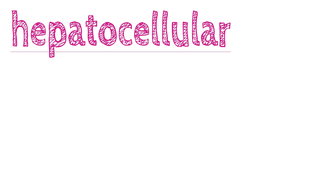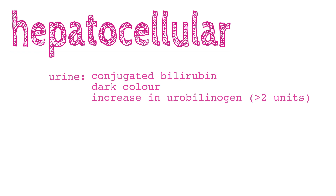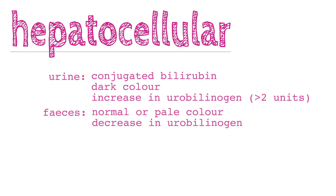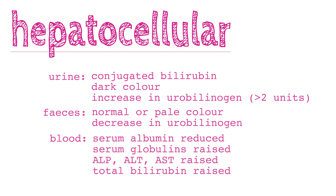Lab findings for intrahepatic jaundice: the urine has conjugated bilirubin present, a dark colour, and an increase in urobilinogen. The faeces has a normal or pale colour and a decrease in urobilinogen. The blood shows serum albumin levels are reduced but globulins are raised in response to an increase in antibodies. ALP, ALT, and AST are raised, as is total bilirubin.